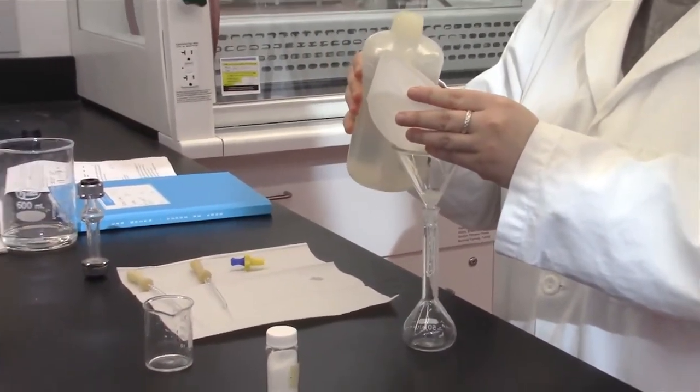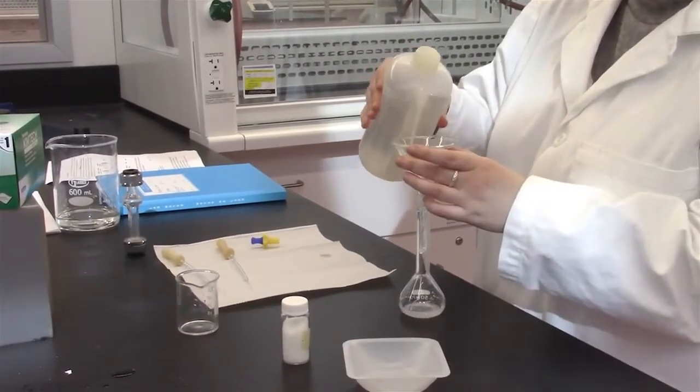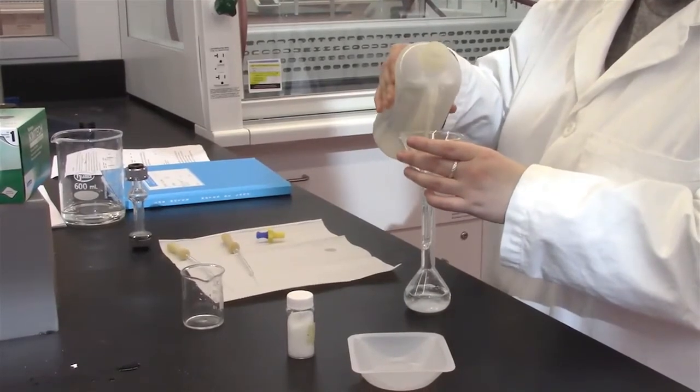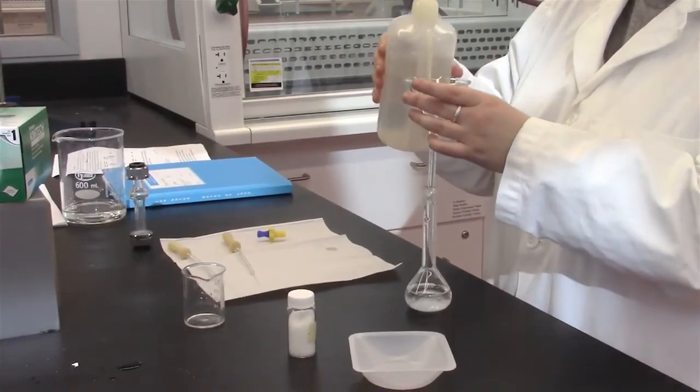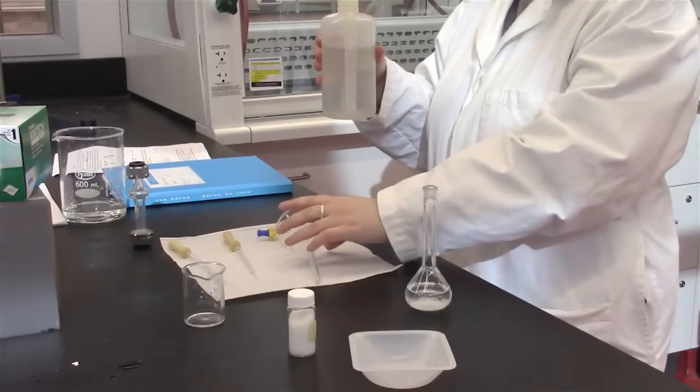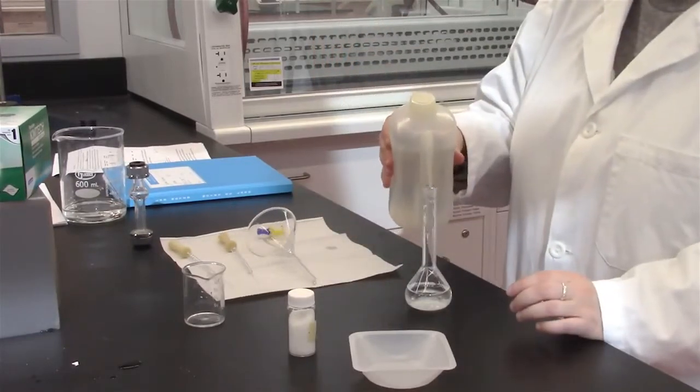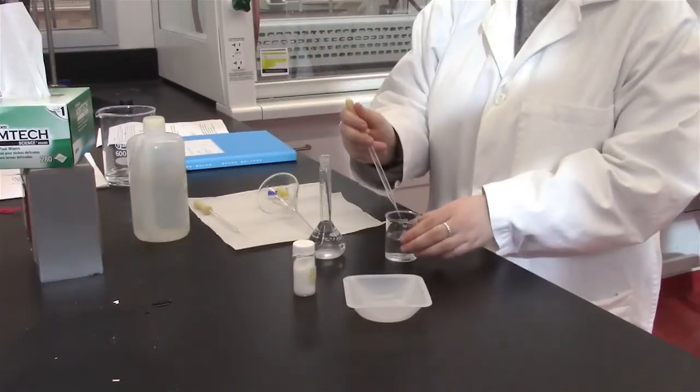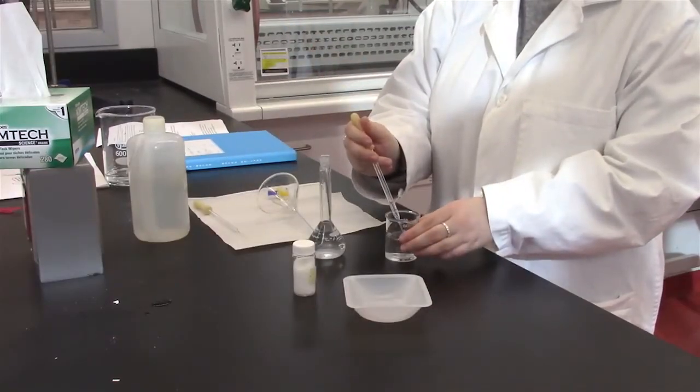Rinse the weighing tray and funnel using deionized water. Using deionized water, fill the volumetric flask to its midpoint. Fill the volumetric flask to the line with a glass pipette.